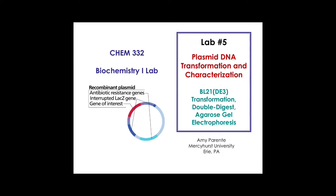This week's lab, lab number five, is what I like to call a multitasking lab because we're going to be performing three different tasks. Remember last week in lab number four, we isolated the plasmid from one bacterial cell line, and now this week we're going to be putting it into a new bacterial cell line. We're going to do transformation, confirm the plasmid has the insert we think it does with a double digest, and visualize that using agarose gel electrophoresis.